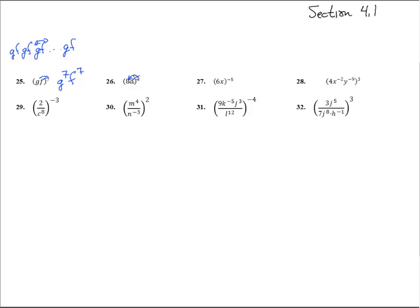Same thing will happen here. So we have 8 to the third, D to the third. 8 times 8 times 8 gives us 512, D to the third.